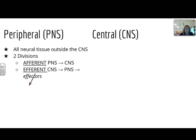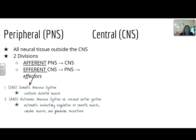The efferent division is separated into two parts as well. The somatic nervous system, which will control some kind of skeletal muscle, and then the autonomic nervous system, or visceral motor system, that's going to automatically have an involuntary regulation of some kind of smooth muscle, like cardiac muscle or some kind of glandular secretion that we don't really have control over ourselves — our bodies do it on their own.